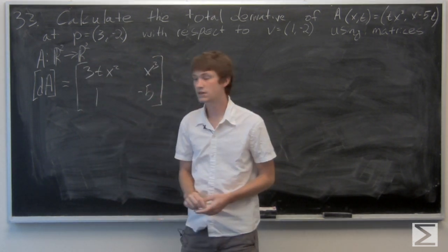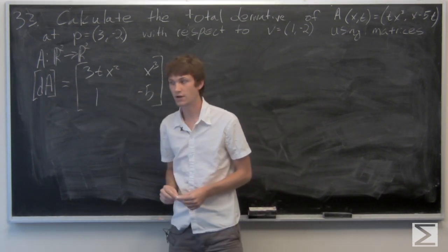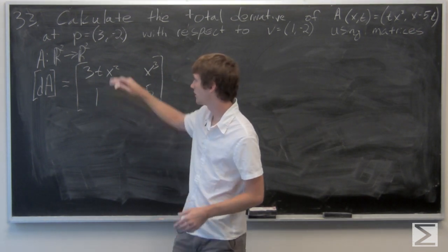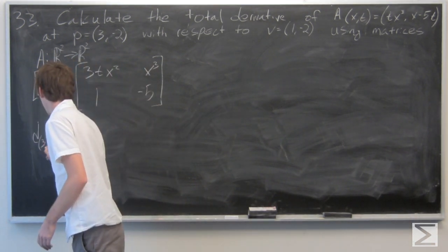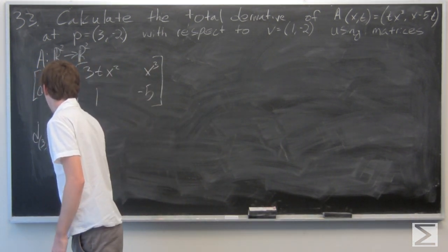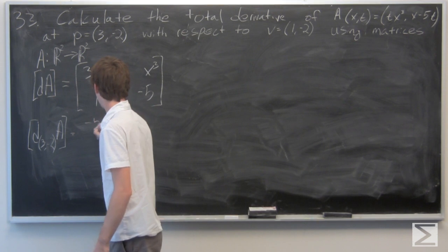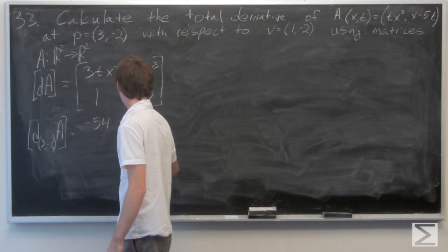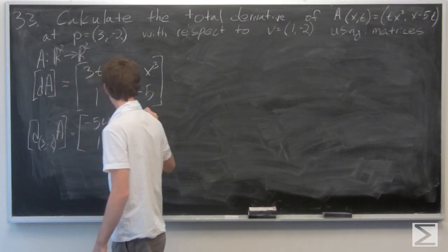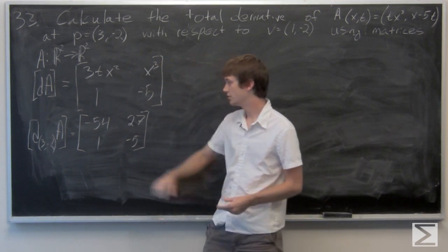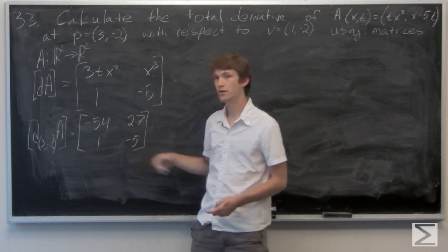So our Jacobian matrix is [[3t·x², x³], [1, -5]]. Now we evaluate this at the point (3, -2), and we get the 2 by 2 matrix with components [[-54, 27], [1, -5]].